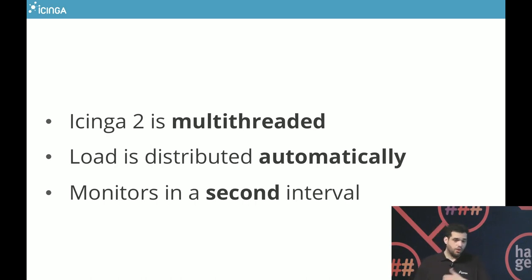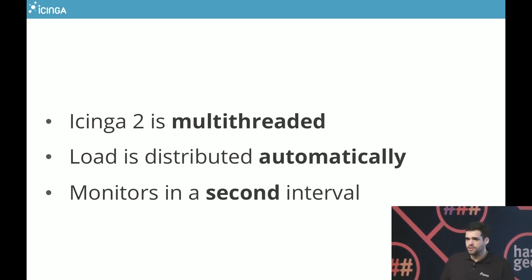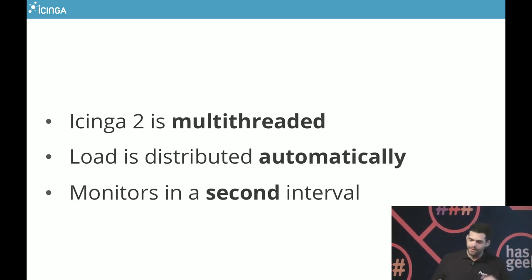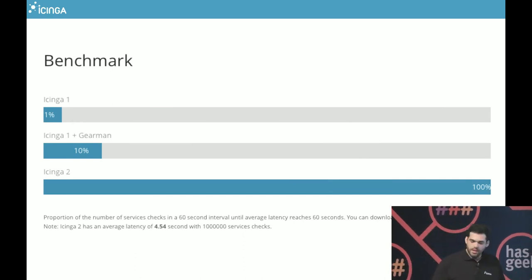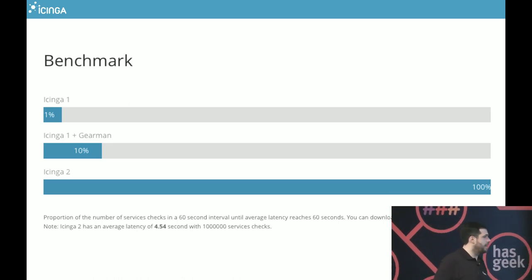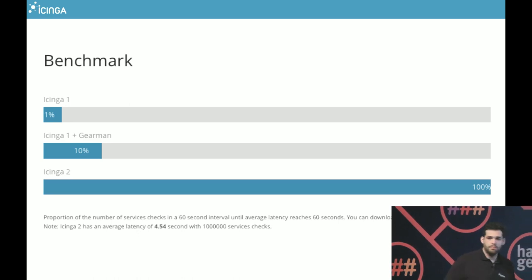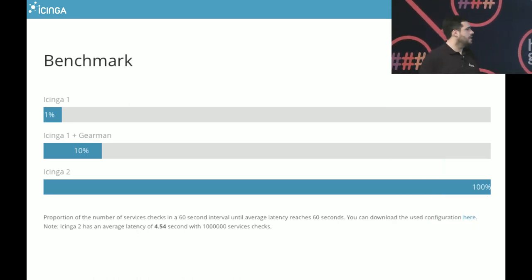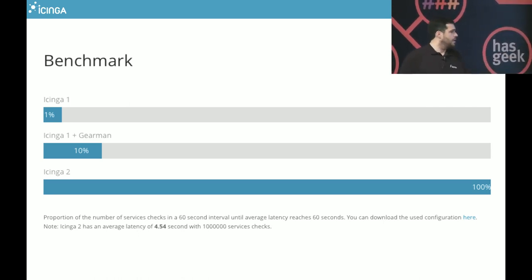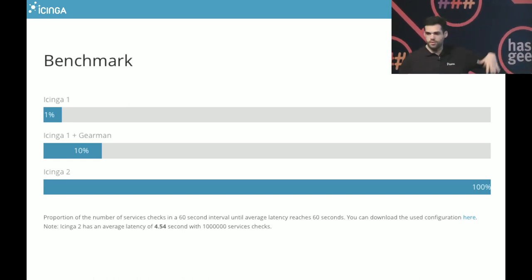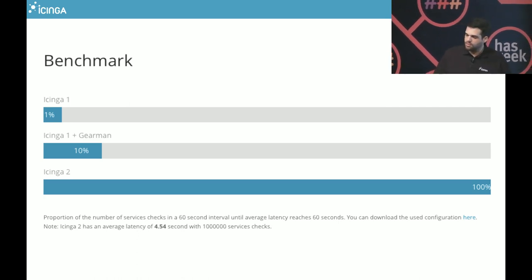Icinga 2 is multi-threaded, so it uses all the CPUs. Load is distributed automatically — if you have many checks, you can add more checker nodes and they split up the configuration. You can monitor at a one-second interval, though caution: the plugin has to be a good one. Starting a 40-megabyte Perl script every second is not ideal. For benchmarking — just to give you an idea — line one is Icinga 1, the middle is Icinga 1 plus Geaman, and at the back is Icinga 2, benchmarked on a single box with one million services in a 60-second interval.